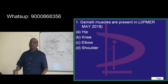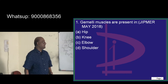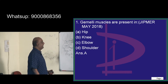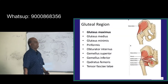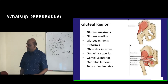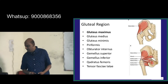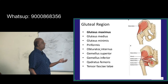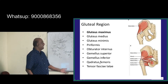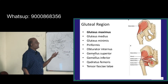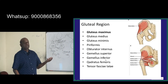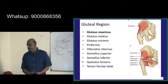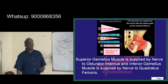Gemelis muscles are present in which location? The easiest answer is that they are present on the hip, in the gluteal region. There you have gluteus maximus, medius, minimus, obturator internus, quadratus femoris, gemelis superior and inferior, and tensor fasciae latae — that is what you need to basically remember.